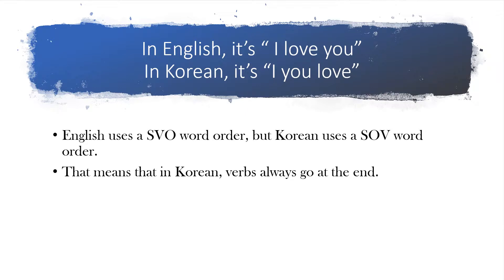In English we use a subject, verb, object word order. So we say 'I' — that's the subject — 'love' — that's the verb — and 'you' — that's the object. Subject, verb, object. But in Korean, they use a subject, object, verb word order. So that means the verbs will always go at the end — no matter what, every time, verbs go at the end. So if you can remember that, just remember to put everything else in front of the verb. In Korean you basically say 'I, you, love' because we have to have that verb at the end.